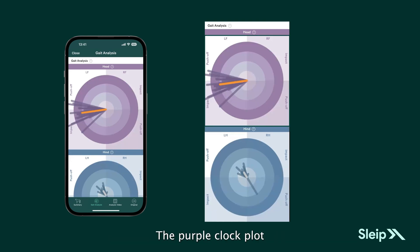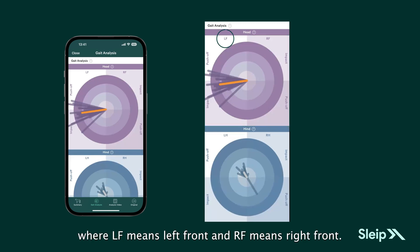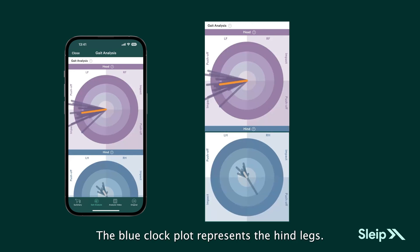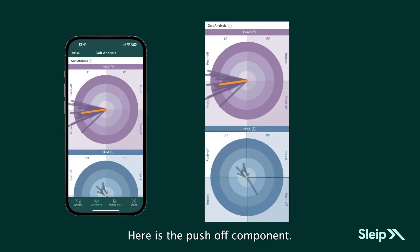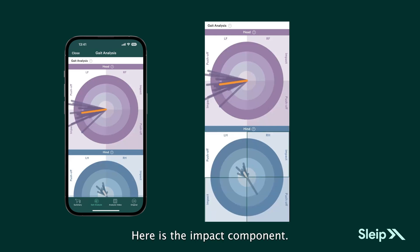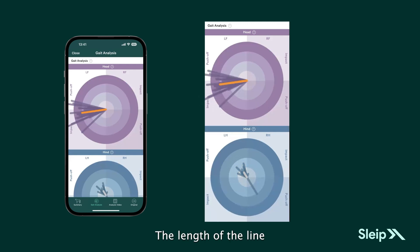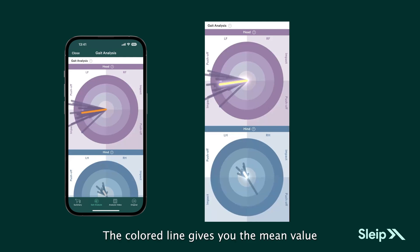The purple clock plot shows measurements of the head, where LF means left front and RF means right front. The blue clock plot represents the hind legs. Here is the push-off component and here is the impact component. Each stride is represented as a line, and the length of the line indicates the severity of the asymmetry. The colored line gives you the mean value of all strides included in your analysis.